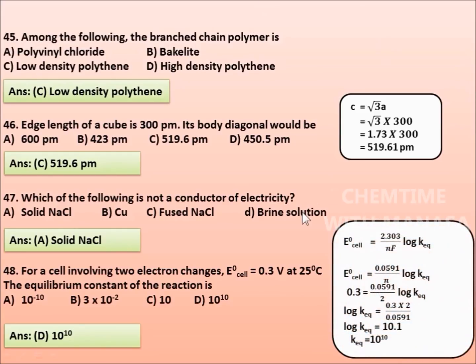Because we know that standard cell potential E0 cell is equal to 2.303 by NF into log equilibrium constant KEQ. Substituting the value of F, we get 0.0591 by N into log K. 0.3 is equal to 0.0591 by 2 into log K, or log KEQ is equal to 0.3 into 2 divided by 0.0591.